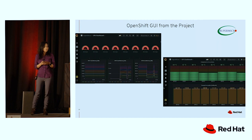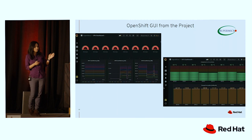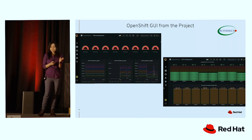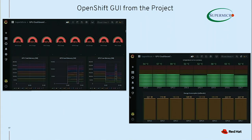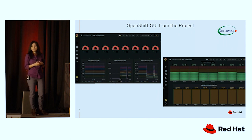These dashboards were created using Prometheus and Grafana. On the left, you can see the actual GPU usage — how much of each GPU is being used along with GPU memory usage. On the right, you can see GPU temperatures, which are very important to monitor during training workloads, along with power usage. The OpenShift GUI gives you tools to monitor every aspect of your project however you want to monitor or control it — this is a great example of OpenShift features we were able to implement for our project.